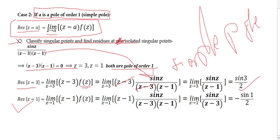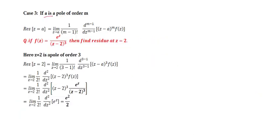Residue at z = 1: limit as z→1 of (z−1) · sin(z)/((z−3)(z−1)). The (z−1) terms cancel, giving limit as z→1 of sin(z)/(z−3). Plugging in z = 1, this equals sin(1)/(1−3) = −sin(1)/2. This is the residue at z = 1 for this function.